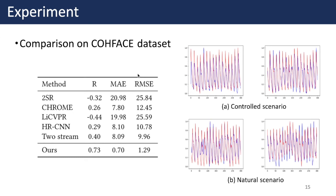The table shows the comparison with existing methods on the ColdFace dataset. The first three rows are traditional methods, while HRCNN and 2Stream are learning-based methods. Our method significantly outperforms these methods in terms of all three metrics. Figure A shows cases captured under a controlled scenario where the estimated signals highly overlap with the ground-truth signal. Figure B shows more challenging cases under a natural scenario; although the results are not as good, they still show good alignment between the estimated and ground-truth signals.